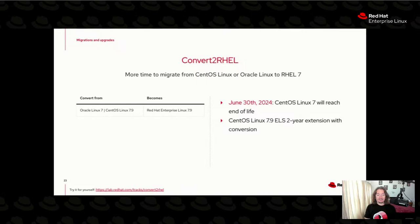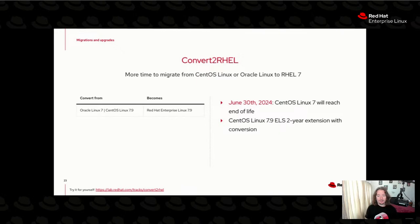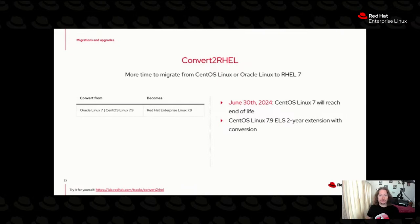CentOS Linux 7: you have 395 days from today to decide what you're doing with those boxes and move. After that, the repositories won't be available and you won't be able to install any new systems on CentOS Linux 7. That's why at Summit we announced a subscription offering for Convert to RHEL — you can actually get support for your CentOS Linux 7 systems that you then convert to RHEL 7 systems.